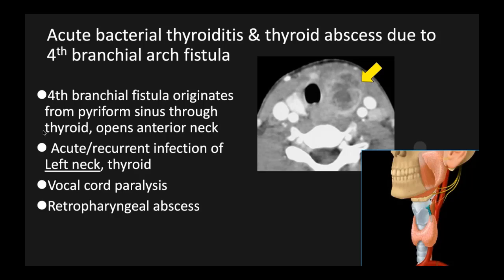The thyroid gland is a very clean, sterile organ, not like the sinuses or palatine tonsils, so they don't usually get infections. When you see an abscess — a collection of fluid and pus — think about a likely fourth branchial arch fistula. The fourth branchial arch fistula originates from the piriform sinus through the thyroid gland and opens into the anterior neck. The patient may have vocal cord paralysis, or it can extend into the tracheoesophageal groove or retropharyngeal space, creating a retropharyngeal abscess.